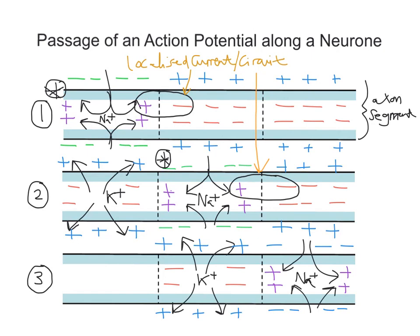And in this third diagram, in this first segment, we have a state where we've restored the potential — our resting potential in this region here. But neither depolarisation nor repolarisation is happening. We would say that region of the axon is resting. So ultimately, this axon goes through periods of depolarising, repolarising, and resting.